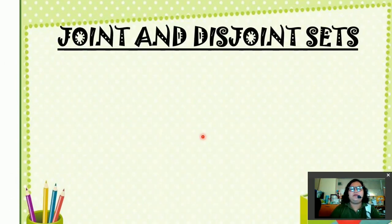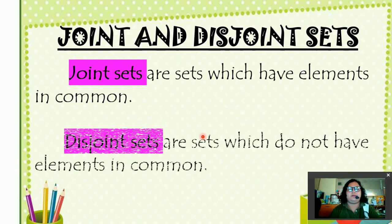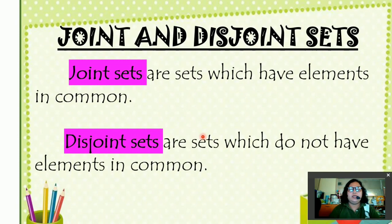We also have joint and disjoint sets. Joint sets are sets which have elements in common. May parehas po silang element. Disjoint sets are sets which do not have elements in common.